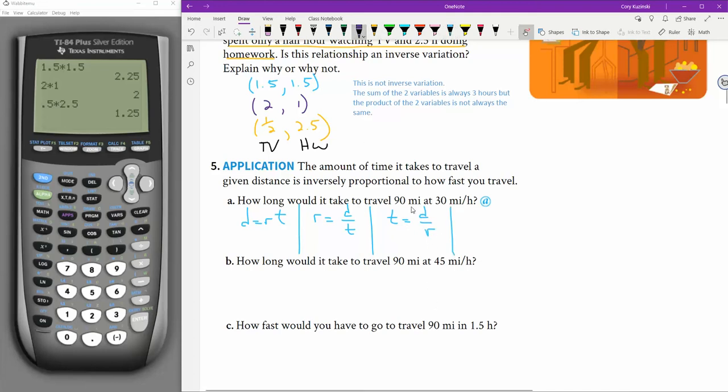So how long would it take to travel 90 miles at 30 miles per hour? Okay. So I want to use this one. Time equals 90 miles divided by 30 miles per hour. Time would be three hours.